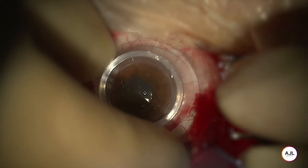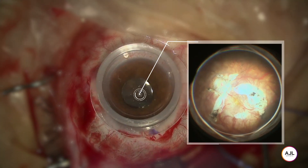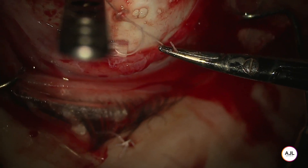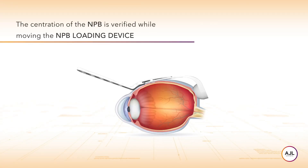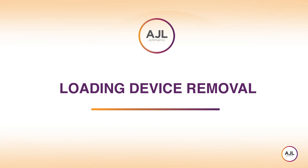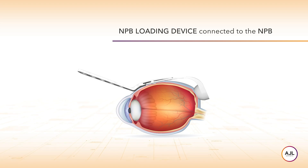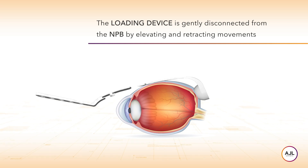A flat contact lens is applied on the clean cornea. The fundus is checked through the microscope and the flat lens. Subsequently, a temporal suture will be performed. The centration of the NPB is verified while moving the NPB loading device. The loading device is then gently disconnected from the NPB by elevating and retracting movements.